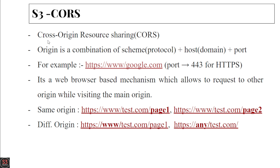CORS stands for Cross Origin Resource Sharing. Your origin is the combination of scheme (also called protocol) plus host (also called domain) plus the port. For example, with the link https://google.com, the protocol is HTTPS, the port is 443, and the domain is Google — that is the origin.